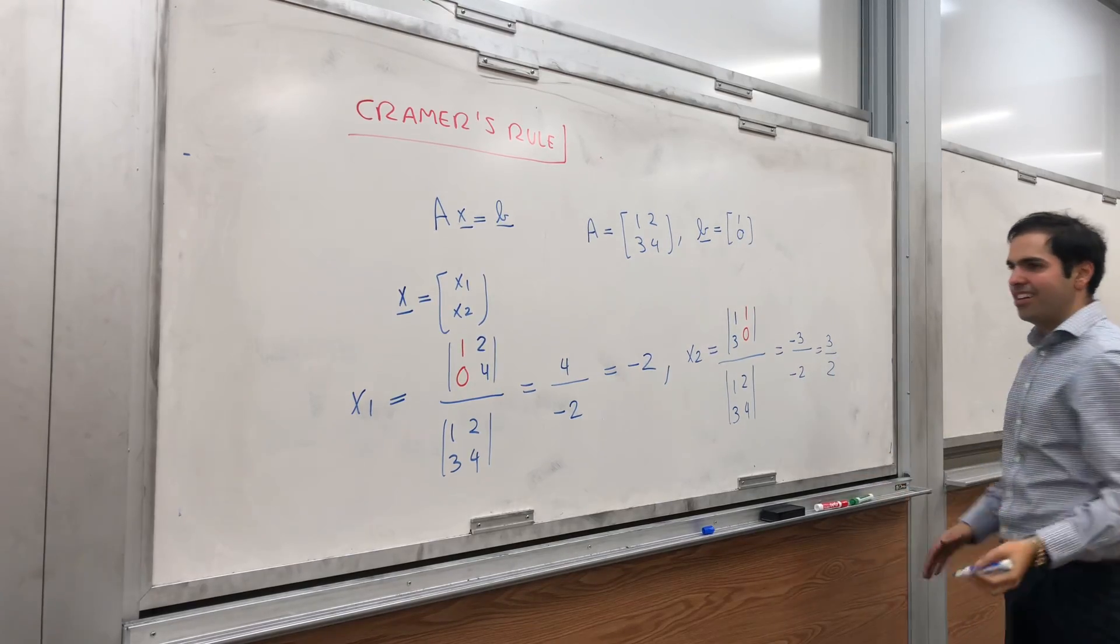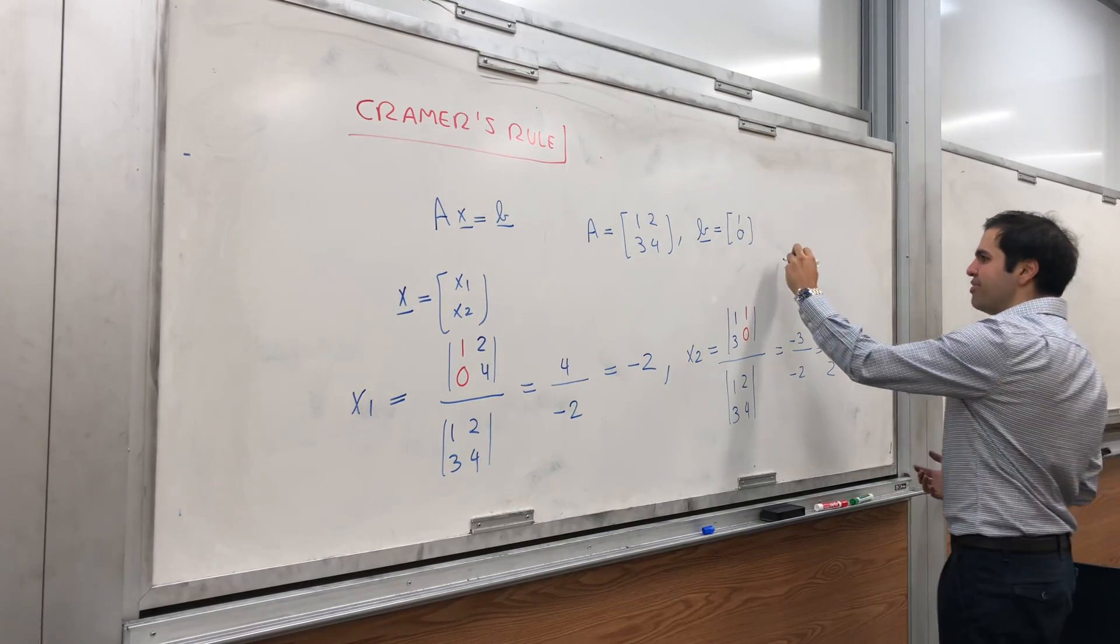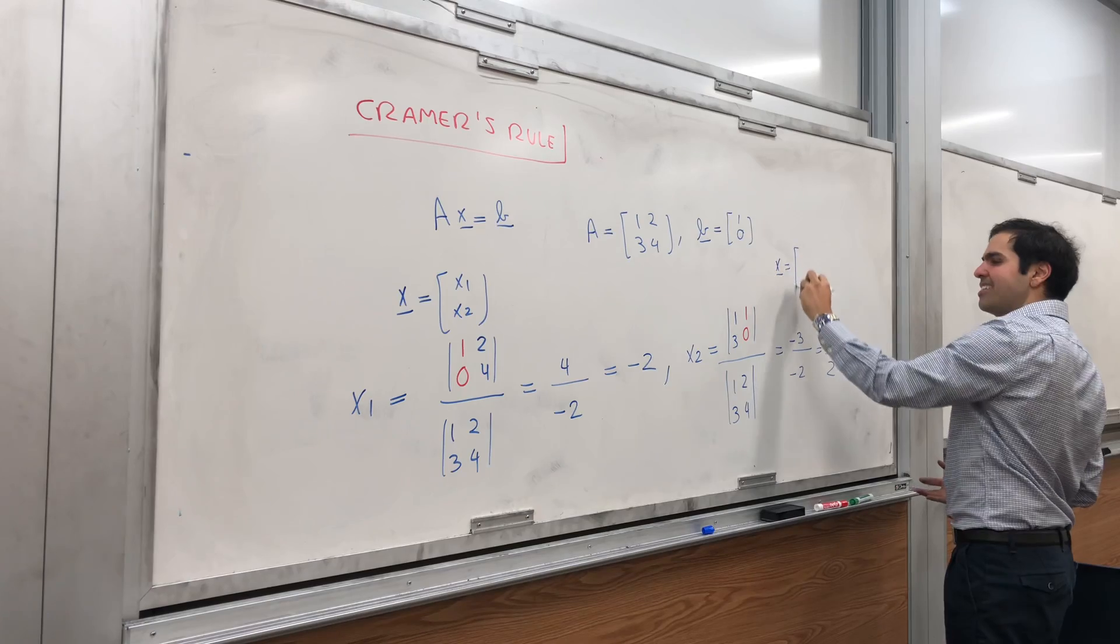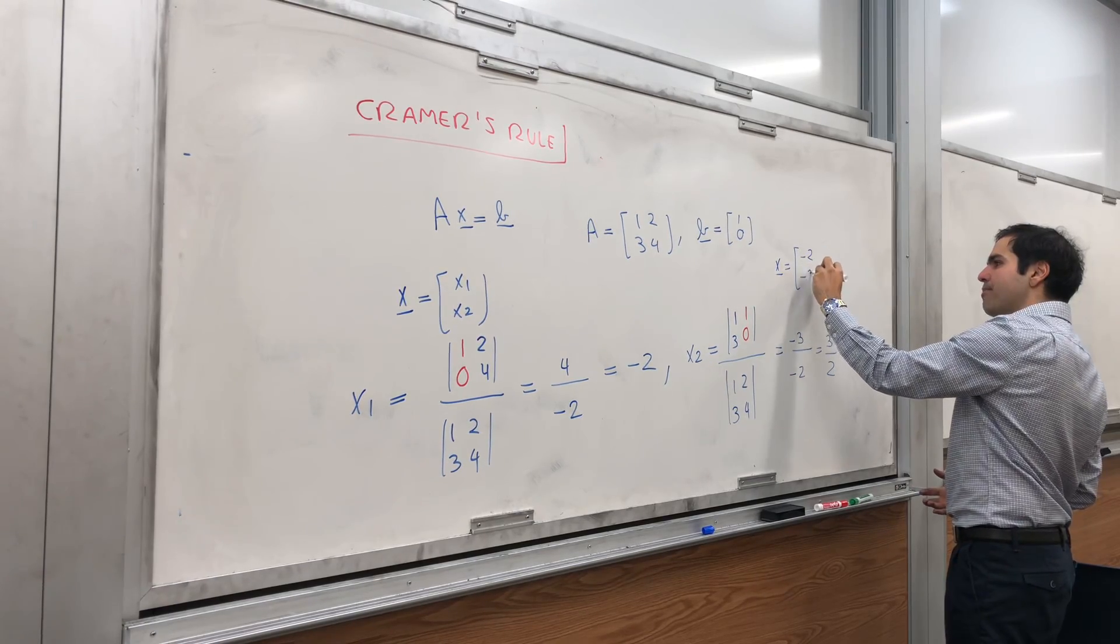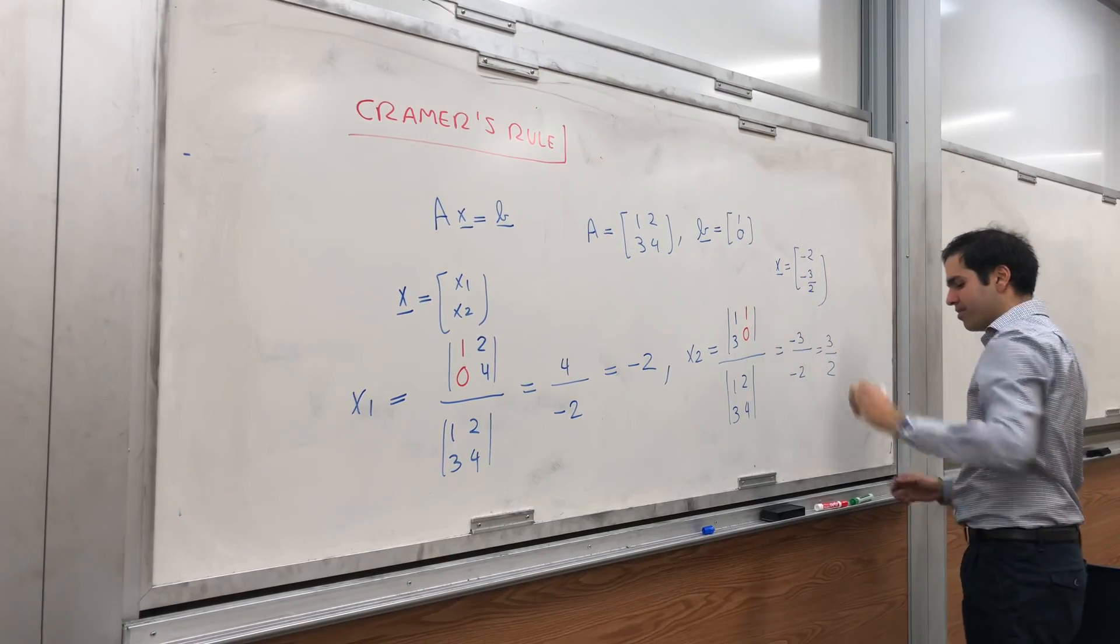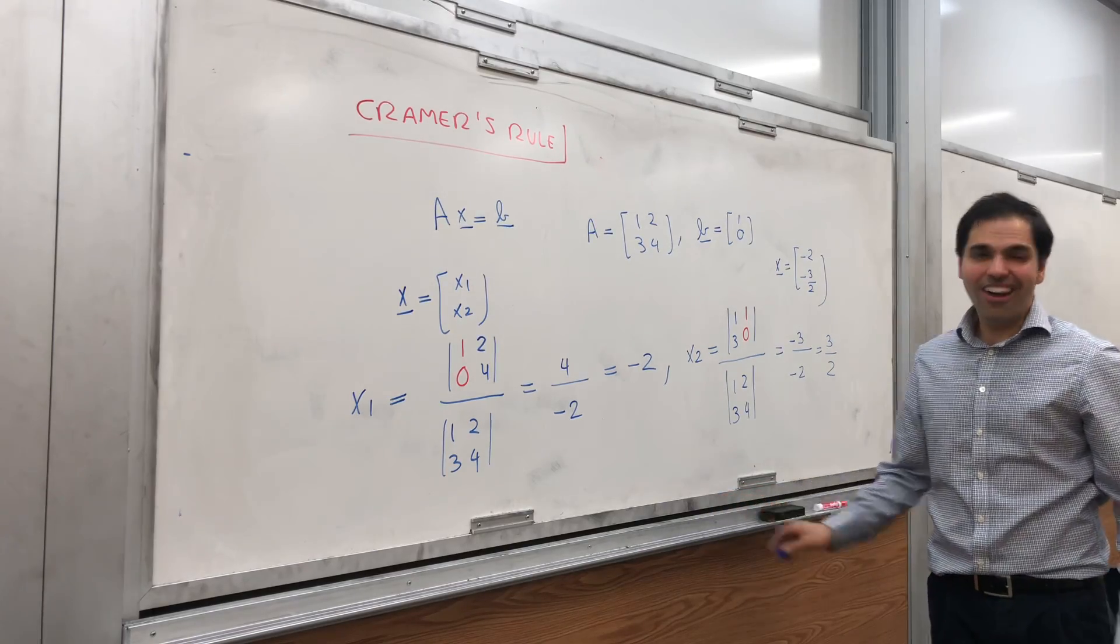And tada! This gives you your solution, so x is minus 2 and minus three halves. How neat is that?